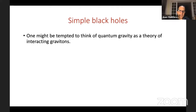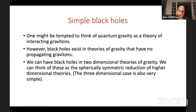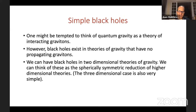Now we'll discuss some simple models for black holes. One is tempted to think about quantum gravity as a theory of interacting gravitons. But it's interesting that black holes exist even in theories of gravity that have no propagating gravitons — for example, in two-dimensional or three-dimensional theories of gravity. Classically, these two-dimensional theories can be thought of as spherically symmetric reductions of higher-dimensional theories.